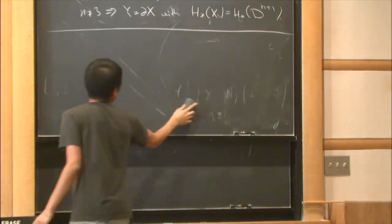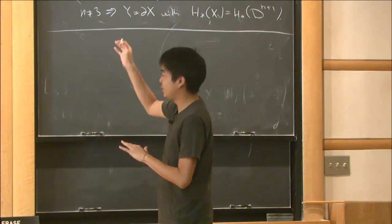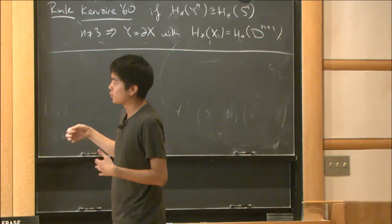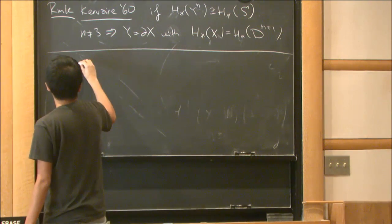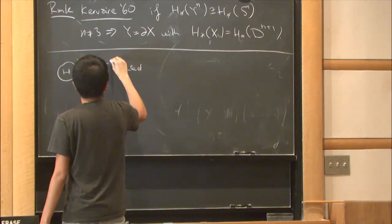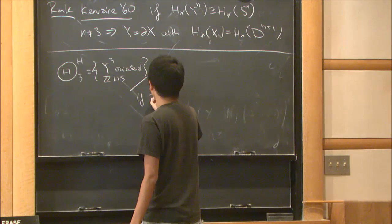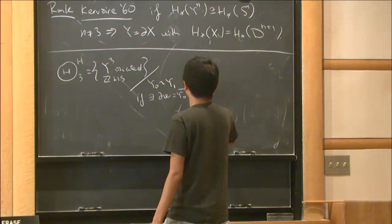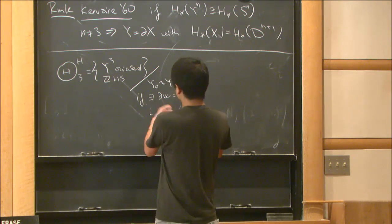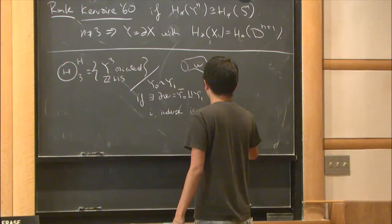The original question was which homology spheres bound homology balls, but a natural object to study is all homology spheres up to homology cobordism. I define θ_H³ as the set of oriented homology spheres, where Y₀ is equivalent to Y₁ if there exists a W such that the boundary is Y₀ disjoint union Y₁ and the inclusions of the boundary components induce isomorphisms in homology.